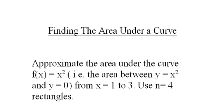Finding the area under a curve, we're going to approximate the area under the curve f of x equals x squared, that is the area between y equals x squared and y equals 0, from x equals 1 to x equals 3. And we're going to use n equals 4 rectangles to do this.